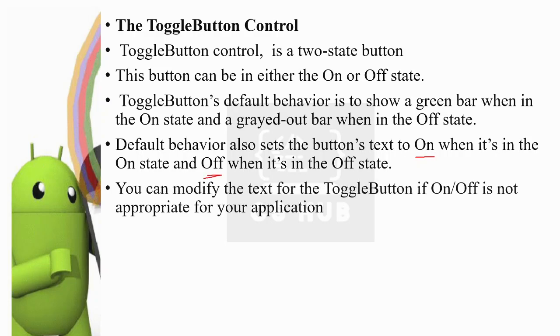You can modify the text for the toggle button if 'on' or 'off' is not appropriate for your application. We can change the on and off text to suit our application.